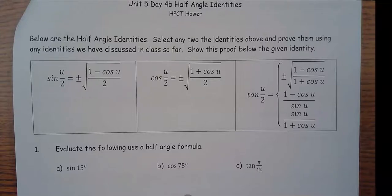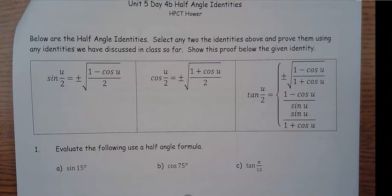This is Unit 5, Day 4B. Yesterday we did the double angle, today we're going to do half angle identities. Kind of the same reason as yesterday — if you don't have a calculator on you, but you have a certain angle, if you have half or double of a reference angle, you can use the double and the half angle identities.